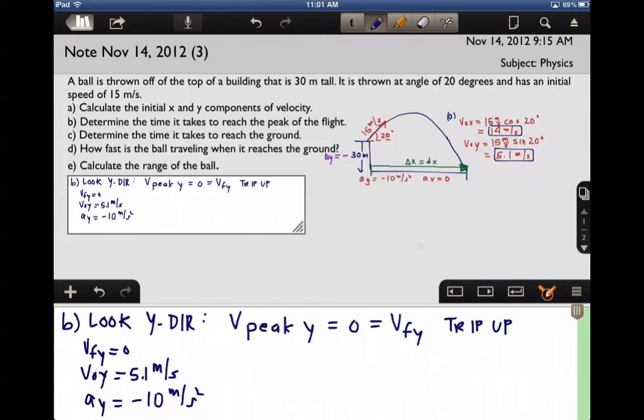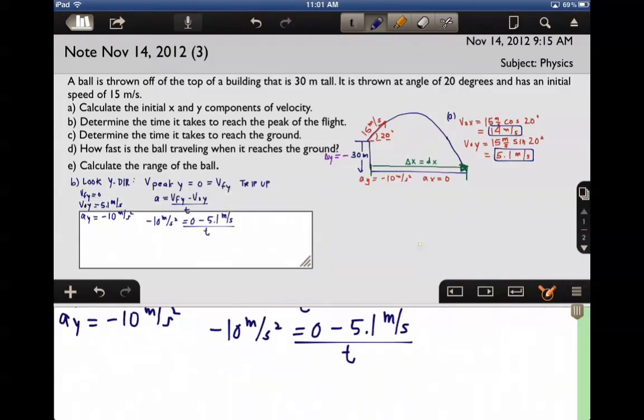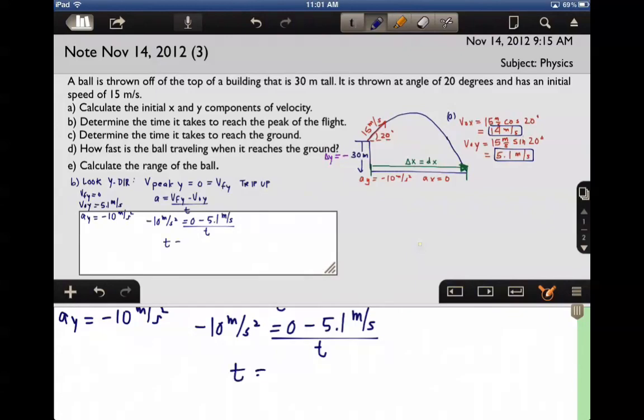I'm going to use: final V_y equals initial V_y plus a_y times time. So 0 equals 5.1 meters per second plus negative 10 meters per second squared times time. And when I solve for time, I'm going to get 0.51 seconds.